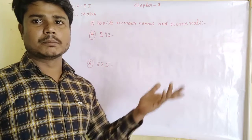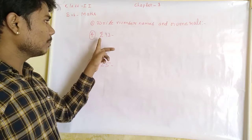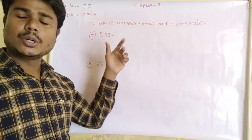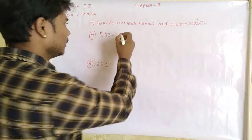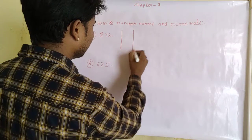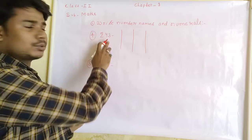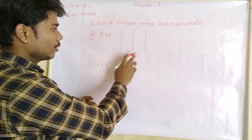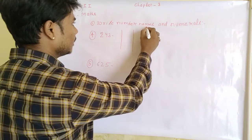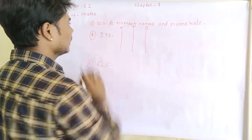First of all, we have to represent 243 on the abacus. This is a 3-digit number, so I have drawn 3 vertical lines. This is ones, this is tens, and this is hundreds.